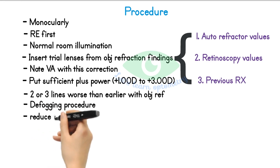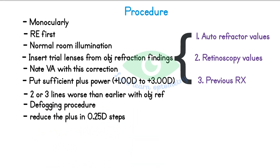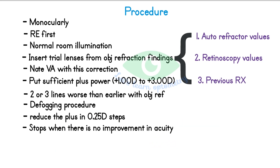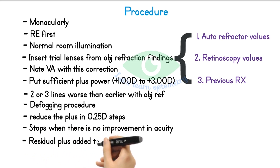Slowly reduce the plus power in 0.25 steps, directing the patient's attention to the largest optotype and encouraging them to read downwards as the optotypes transition from larger to smaller ones. Always remember to put the new plus lens in first and then remove the old plus lens from the trial frame — otherwise, accommodation could be stimulated. You should expect the patient to report improved visual acuity with every 0.25-step reduction. The defogging process ends when reducing plus power no longer improves the visual acuity. The residual plus power is then added to the objective findings.